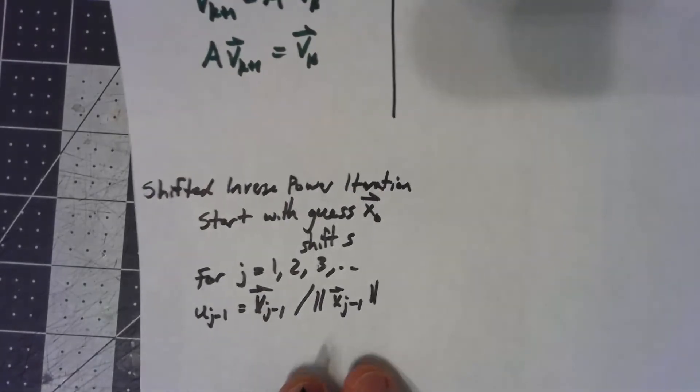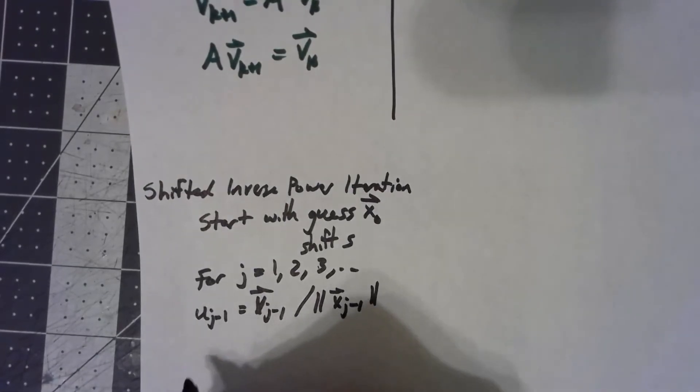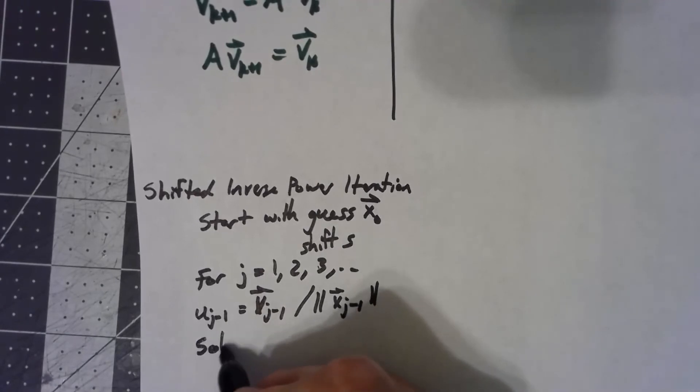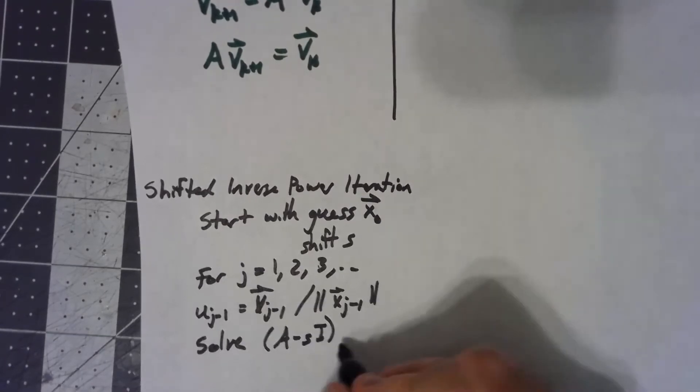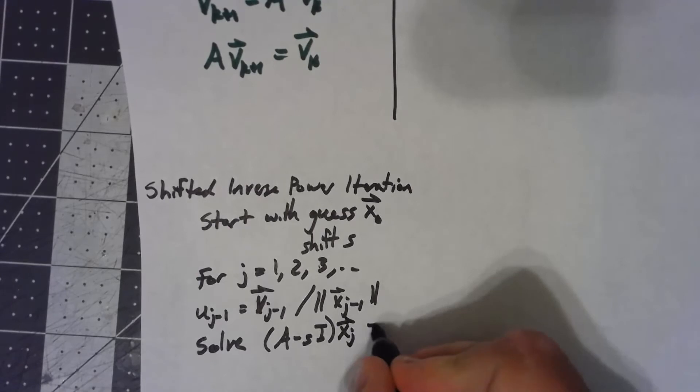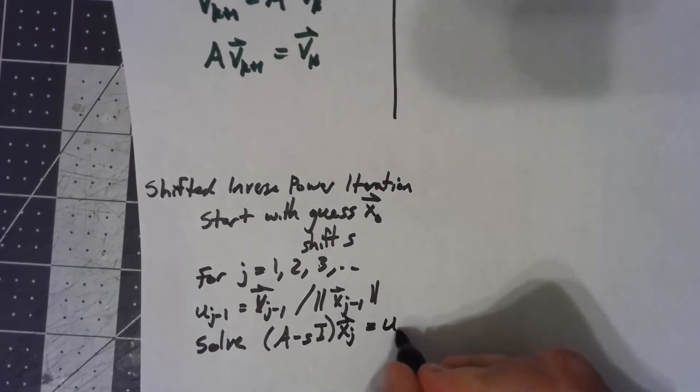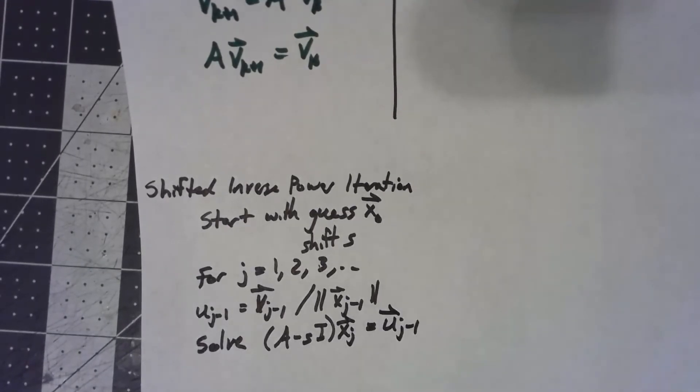Then we'll solve the system of equations. We'll solve A minus s I times x_j is equal to my u_{j-1}, that normalized vector we just found.